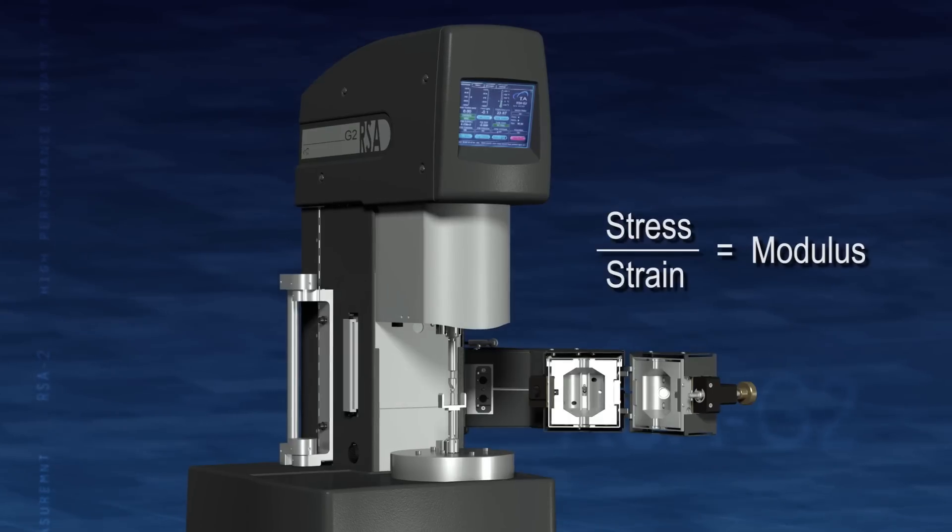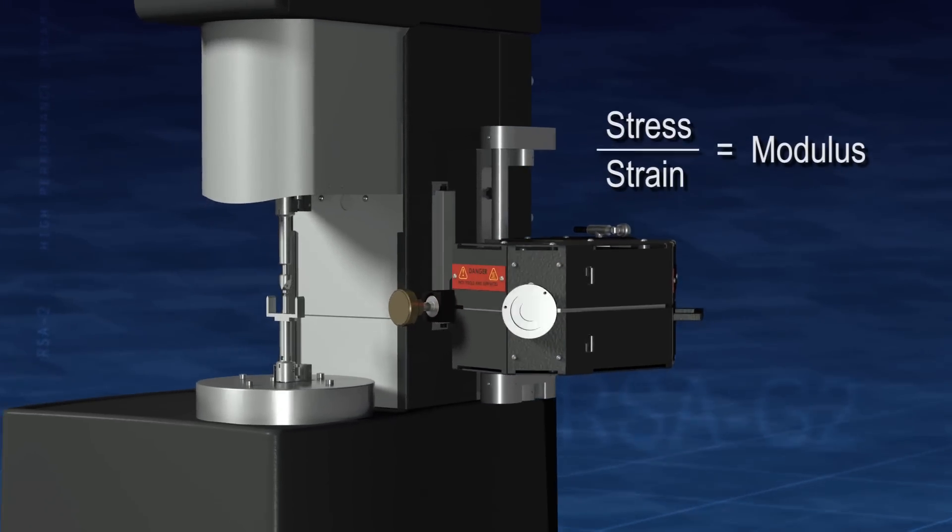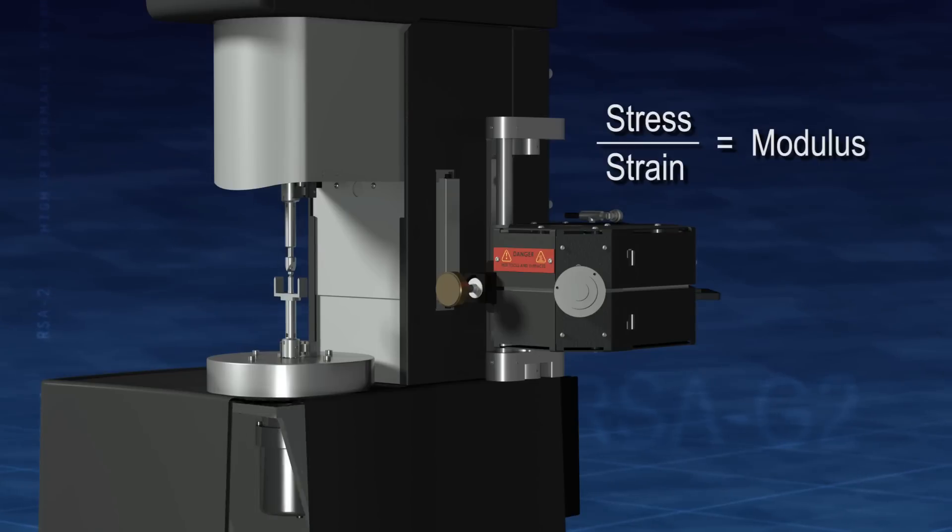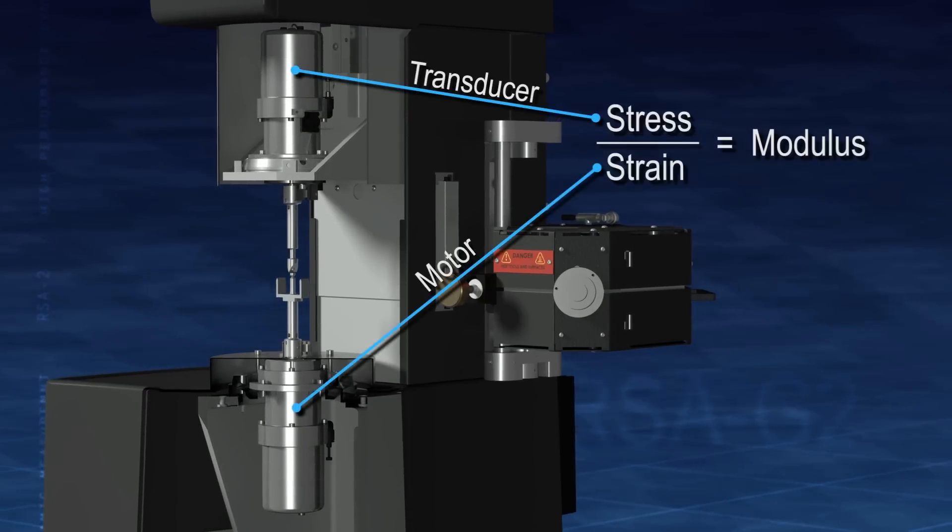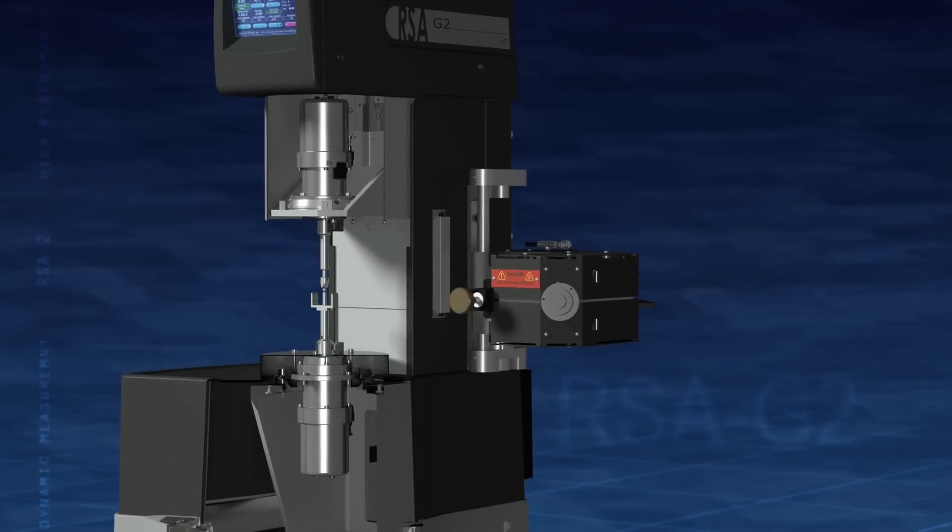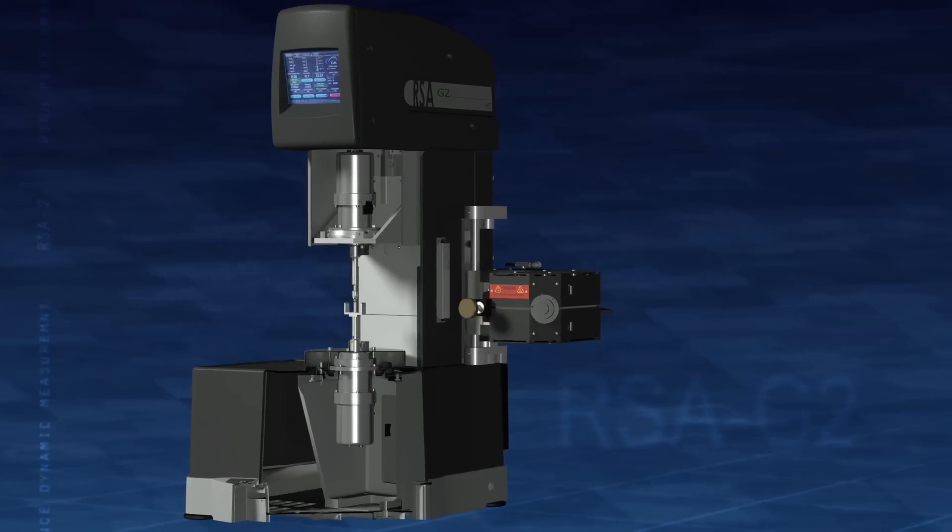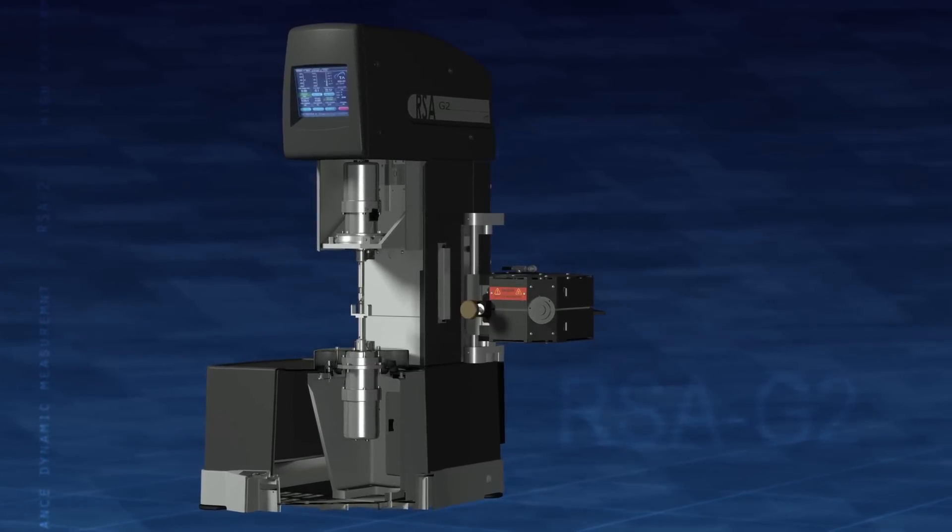The RSA-G2 provides the purest and most accurate viscoelastic information by measuring the fundamental parameters of stress and strain independently. This ensures measurements are free of instrument artifacts such as motor friction and inertia over wide ranges of stress, strain, and frequency.